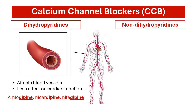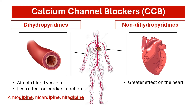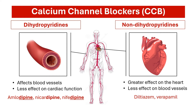The non-dihydropyridine CCBs have a greater effect on the heart muscle cells, decreasing heart rate and contractility. But they are less effective in promoting vasodilation. Examples of non-dihydropyridines include diltiazem and verapamil.